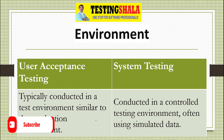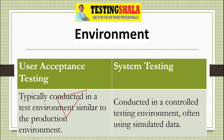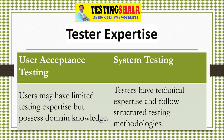The next difference is environment. User acceptance testing is normally conducted in a production environment. System testing is conducted in a controlled testing environment that simulates production but uses simulated data.